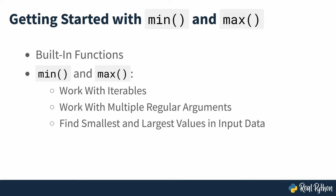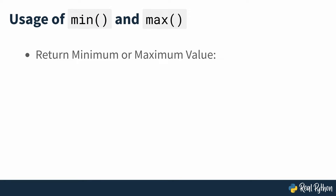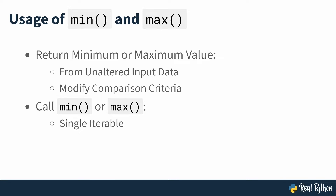Whether you're using Python's min or max, you can use the function to achieve two slightly different behaviors. The standard behavior for each is to return the minimum or maximum value through straightforward comparison of the input data as it stands. The alternative behavior is to use a single argument function to modify the comparison criteria before finding the smallest and largest values. To explore the standard behavior of min and max, you can start by calling each function with either a single iterable as an argument or with two or more regular arguments.